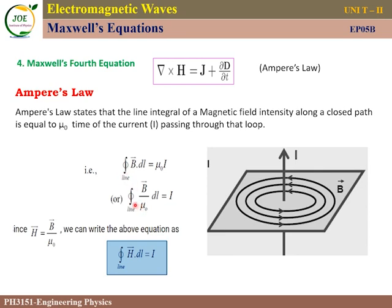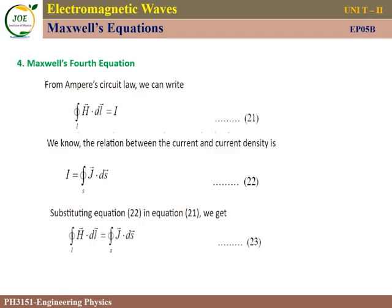Since H = B/μ₀, where H is the magnetic field intensity and μ₀ is the permeability of free space, we can substitute to get: ∮H·dL = I. This is Ampere's law rewritten in terms of H, and it forms equation 21.